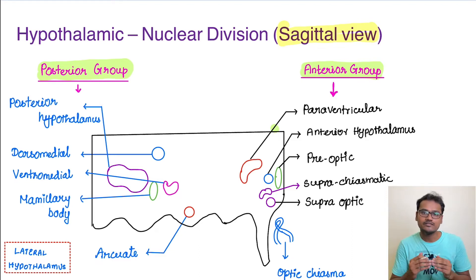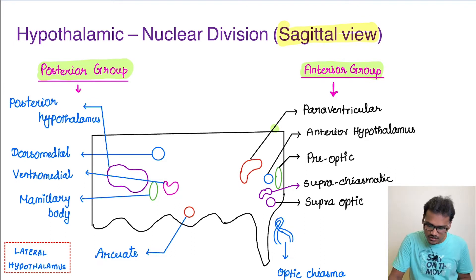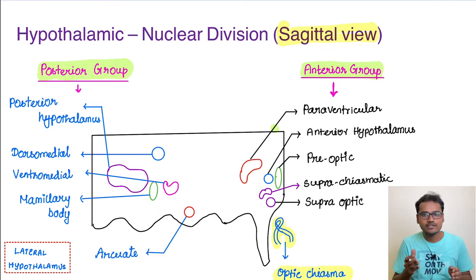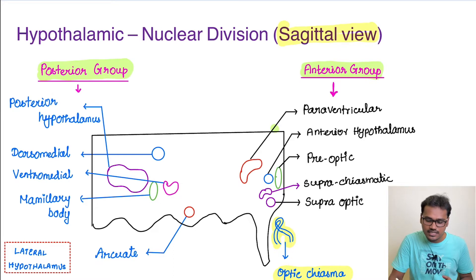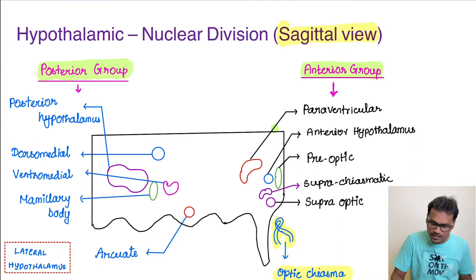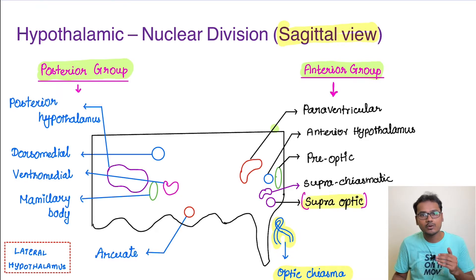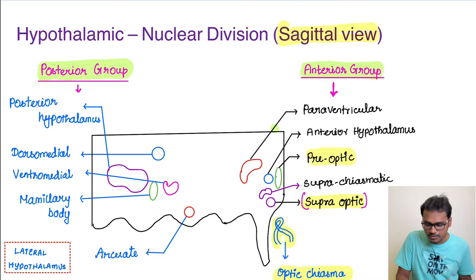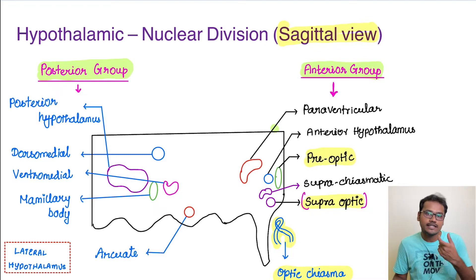In the anterior group, one important structure located just below the anterior part of the hypothalamus is the optic chiasma — the crossing of the optic tract. The nuclei near this structure are named accordingly: supra optic, located just above the optic chiasma, and pre-optic, located just in front of the optic chiasma.